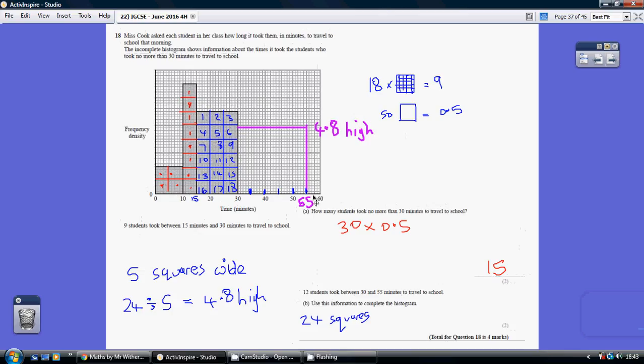1, 2, 3, 4, 5. So I've got a base of 5. So if I've got to have 24 5 by 5 squares, 5 along the bottom, they've got to be 4.8 high.